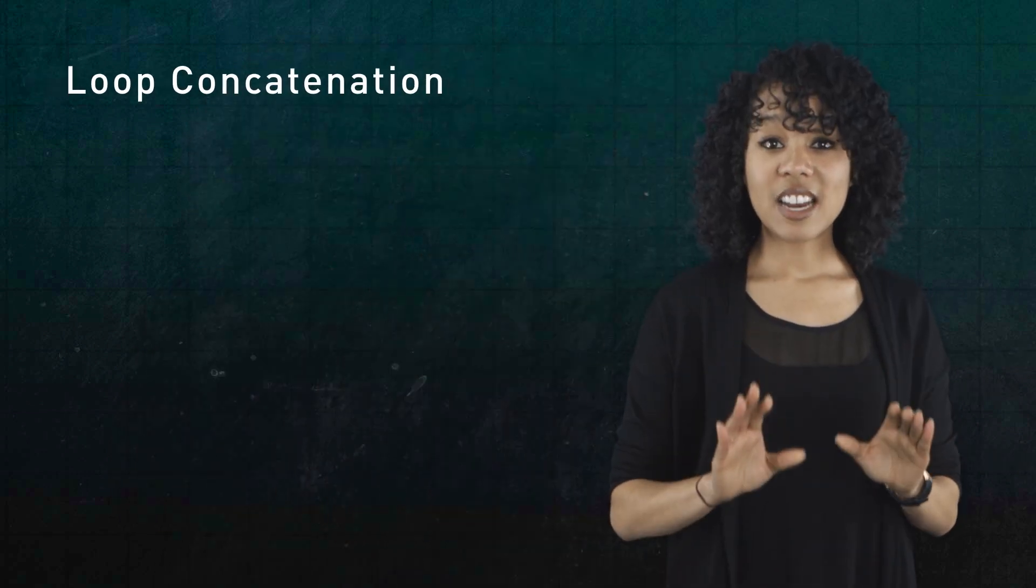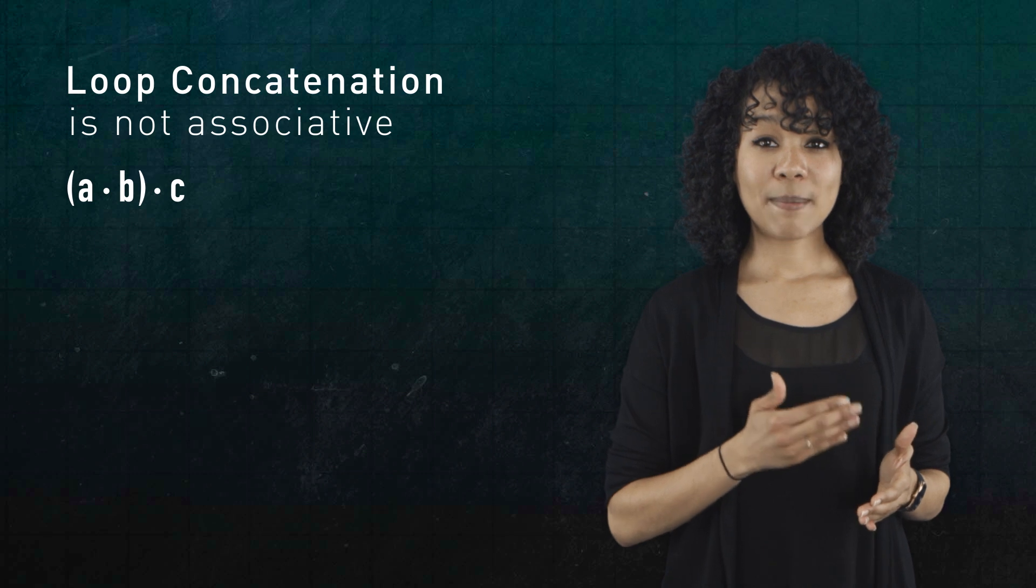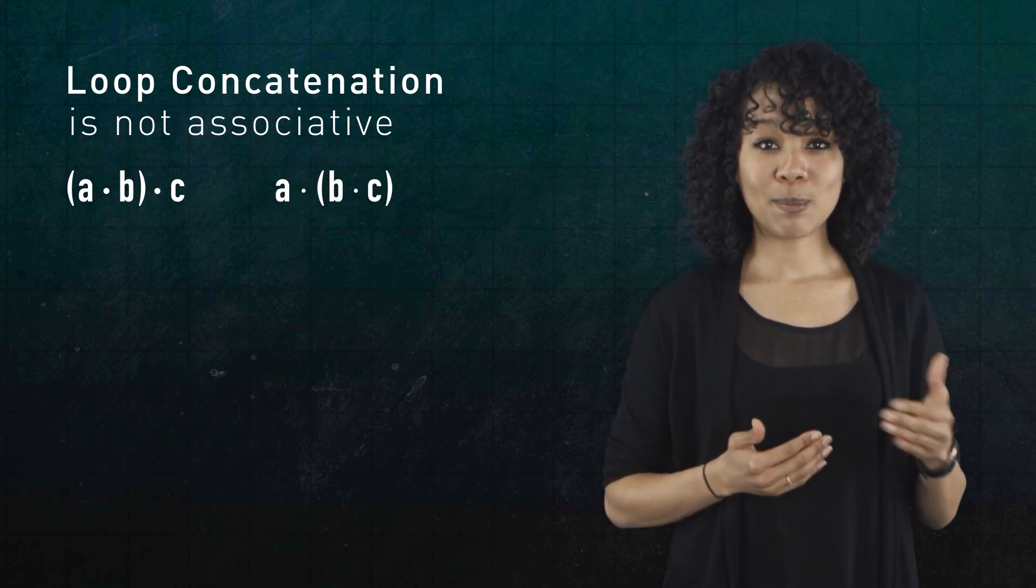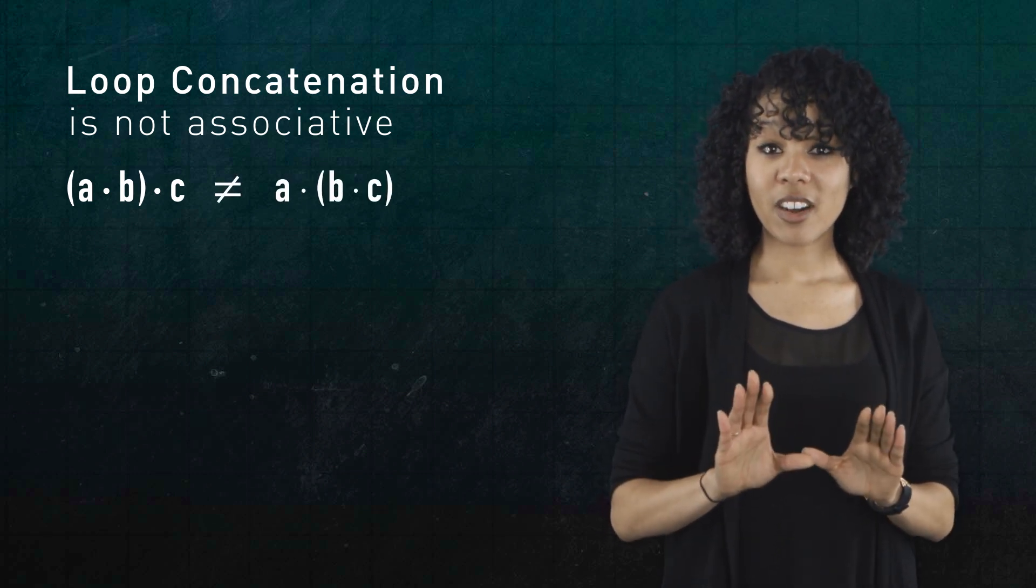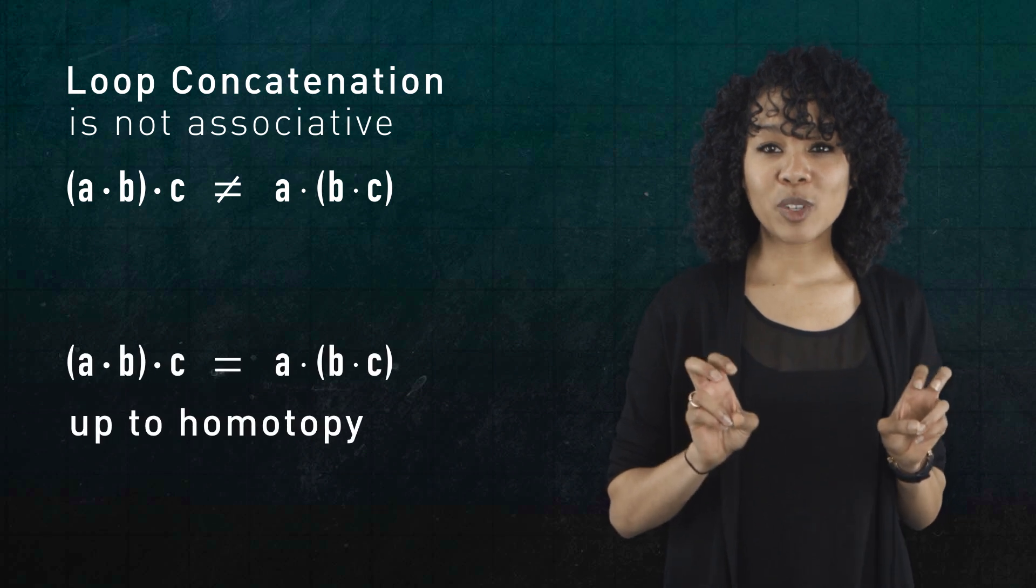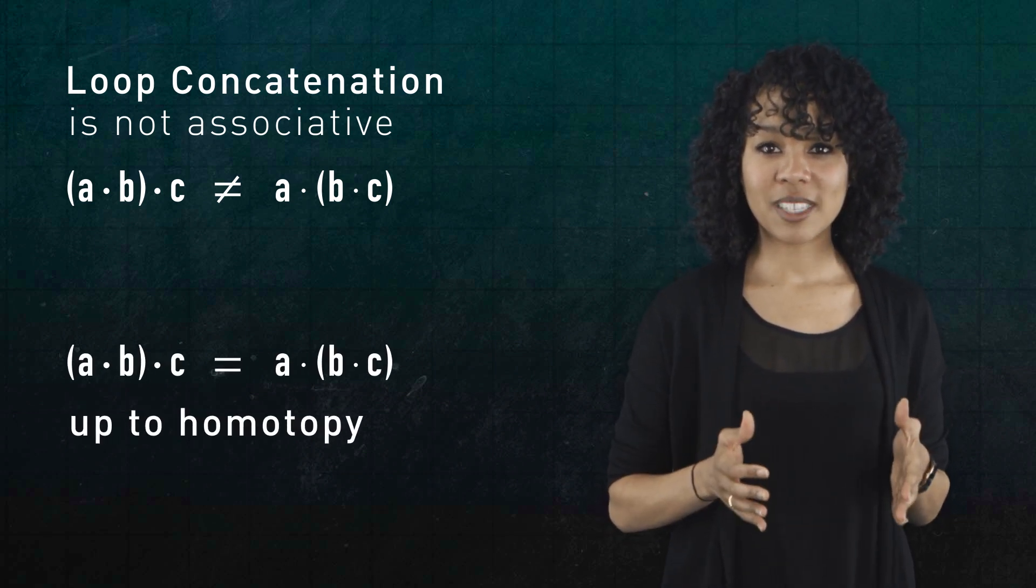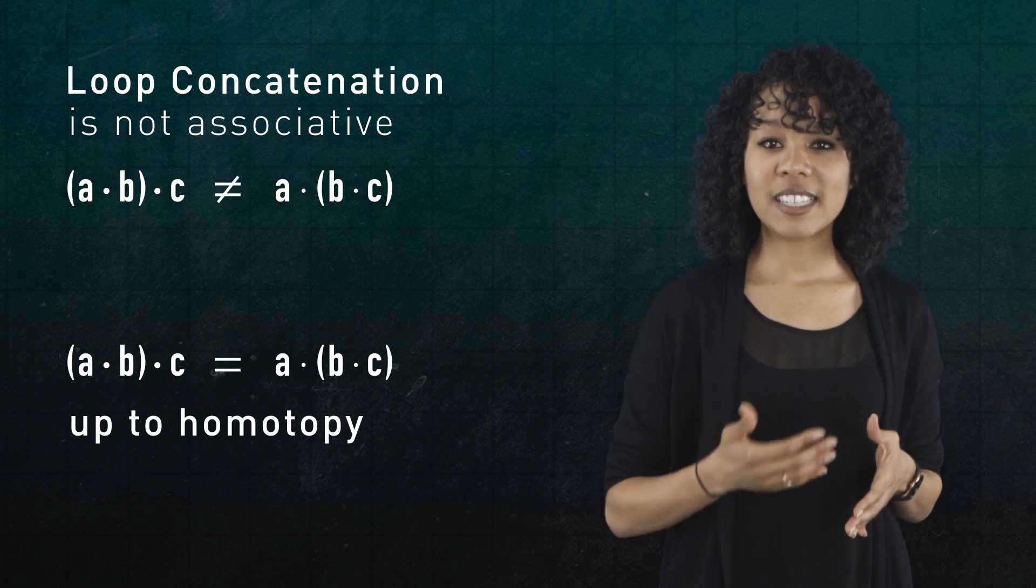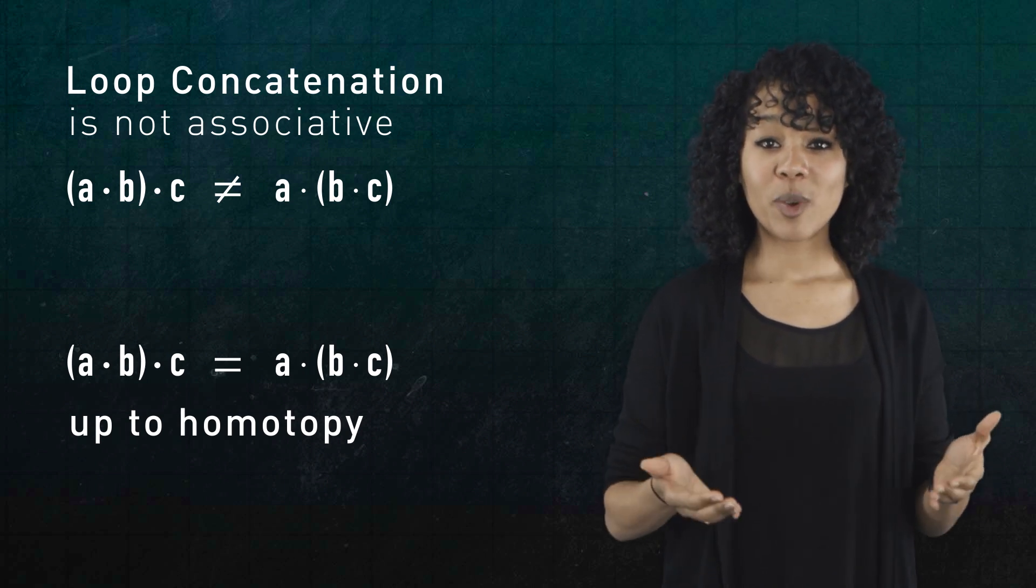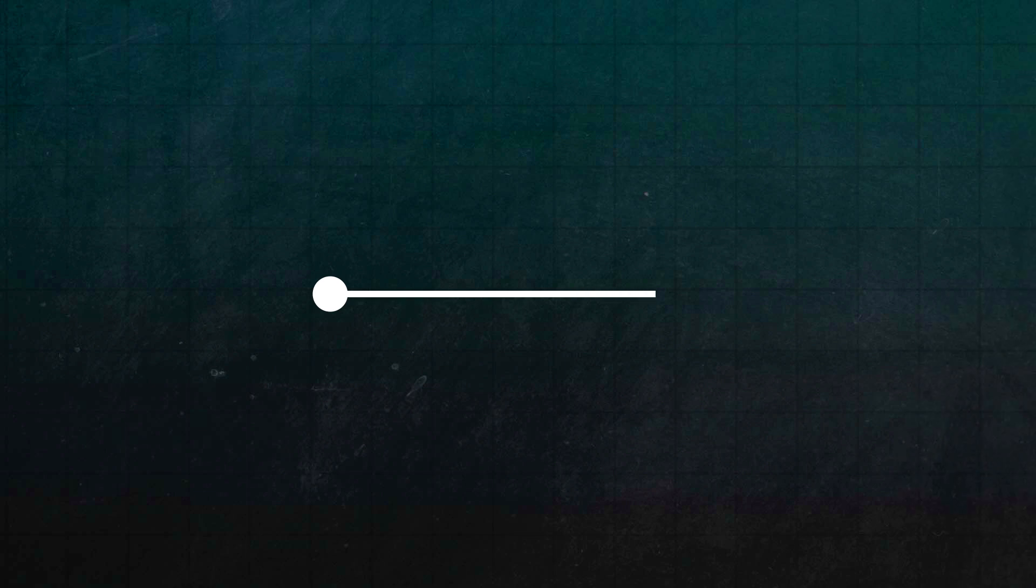Loop concatenation is not associative. Therefore, AB times C and A times BC are not the same. However, they are the same up to homotopy. In other words, there is a continuum of ways to multiply three loops. And this continuum provides a homotopy between the two extremes, which we can represent as a line segment that joins two vertices. The upshot is that a line segment encodes all the ways we can multiply three loops together.